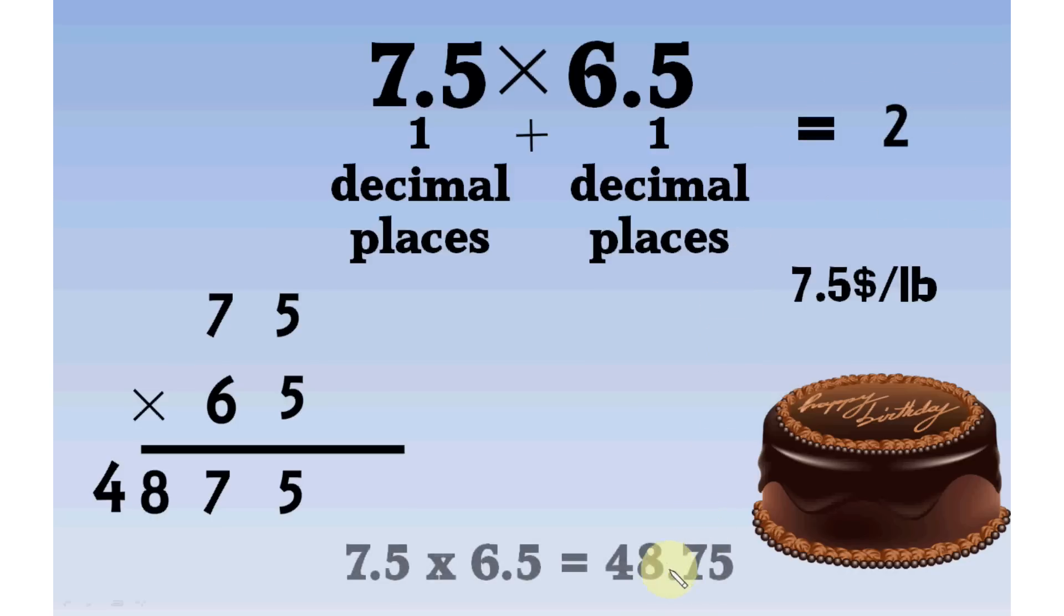There would be 2 digits after decimal. So, final answer is 48.75. 2 digits after decimal, 7 and 5. This cake costs 48.75.